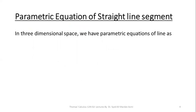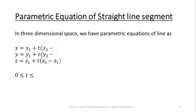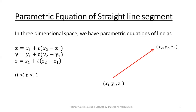Before moving further, we must know the parametric equation of a straight line segment in three-dimensional space. The equations are: x equals x1 plus t times (x2 minus x1), y equals y1 plus t times (y2 minus y1), z equals z1 plus t times (z2 minus z1), where t lies between 0 and 1. Here (x1, y1, z1) is the starting point and (x2, y2, z2) is the ending point. With these formulas, you can parameterize any given straight line path.